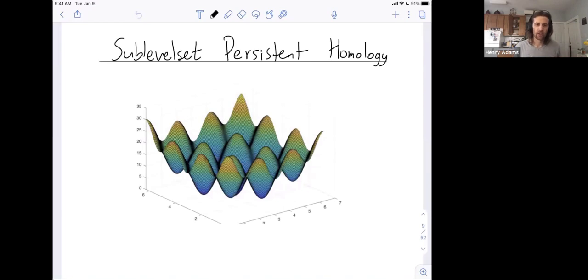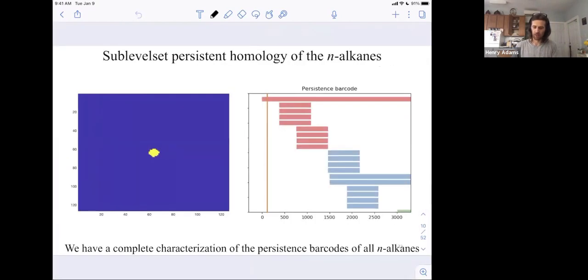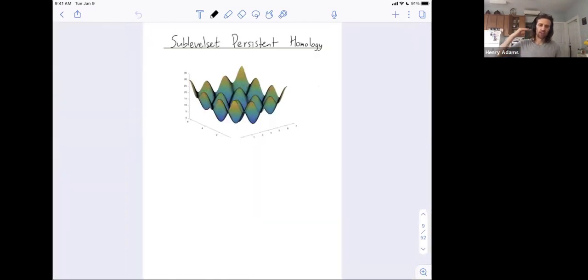So here we have a function, this bumpy function. In sublevel set persistence you use a function defined on a space in order to filter that space. Essentially imagine that this is a function defined on a square. In sublevel set persistence you chop at a certain height and you only include the parts of your square where the function is beneath that height.